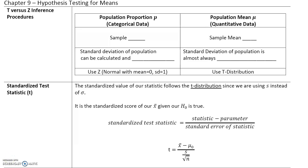In this section, we will talk about hypothesis testing for means. As a quick recap of last section, for a population proportion p, the sample proportion is given by p-hat. The standard deviation of the population can be calculated and is known, as we saw in the previous section. We would use the normal distribution with mean equal to zero and standard deviation equal to one,